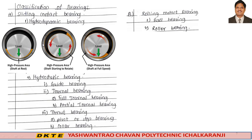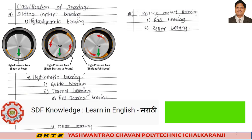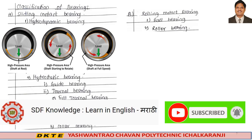In hydrodynamic bearing, the load-supporting high pressure fluid film is created due to the shape and relative motion between the two sliding surfaces. The moving surfaces pull the lubricant into a wedge-shaped zone at a velocity sufficiently high to create a high pressure film, which is essential to separate the two working surfaces against the load.